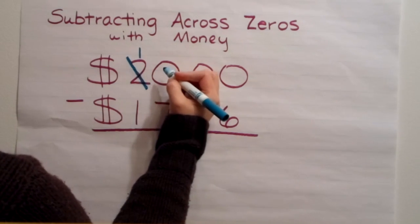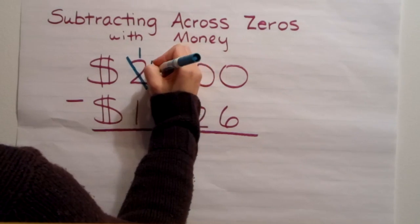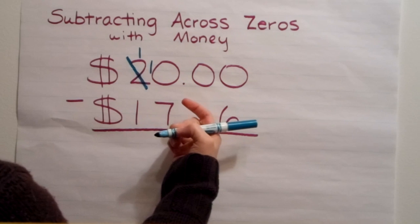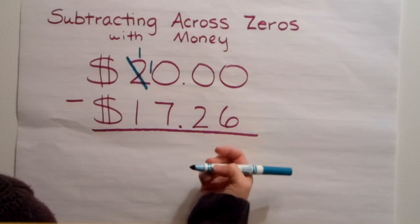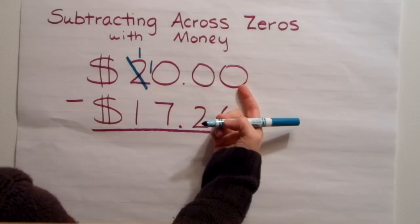We're going to take that one group that we took away and we're going to add it here to the ones place. Now there's ten in the ones place. But that still didn't help me with my smallest place value in the hundredths.